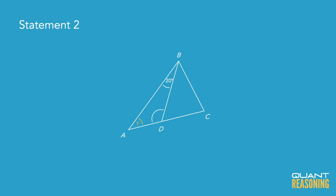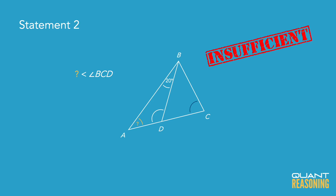Statement two just tells us that the angle we're looking for is smaller than this other angle BCD, but we don't know anything about BCD, so this statement is not sufficient on its own, and the correct answer is A.